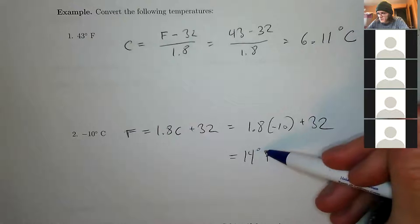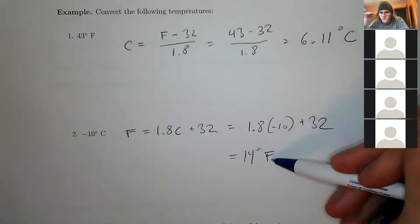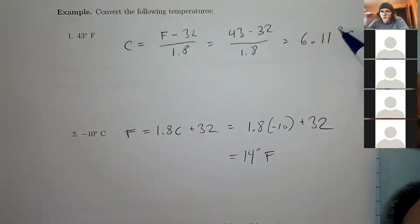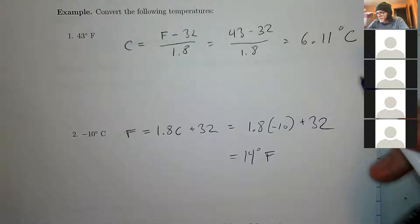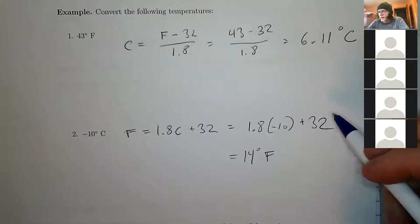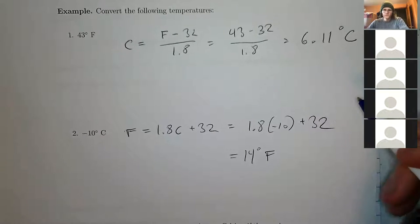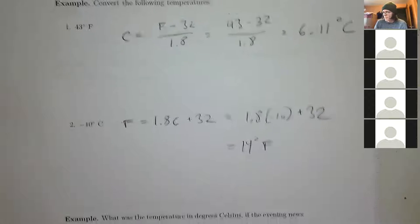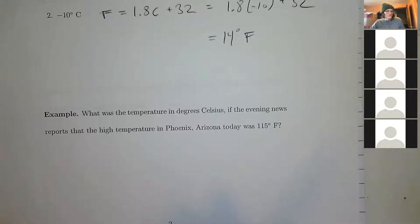That little circle symbol is the degree symbol — so it's 14°F, 6.11°C. I don't know the history of why they're called degrees, but that's what it is. Any issues with converting back and forth?